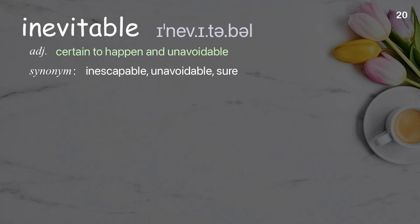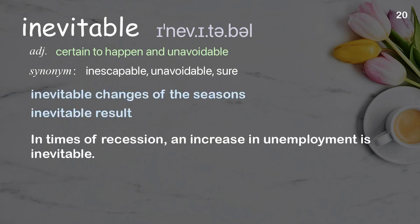Inevitable: certain to happen and unavoidable. Examples: inevitable changes of the seasons, inevitable result. In times of recession, an increase in unemployment is inevitable.